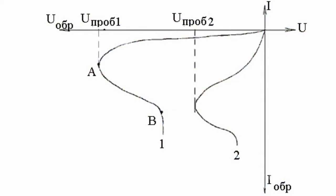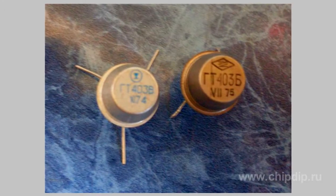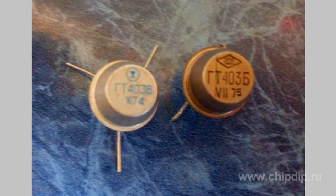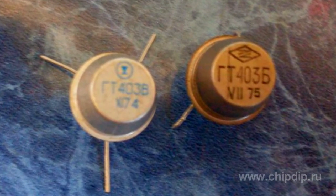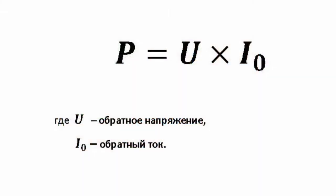The thermal breakdown often occurs in powerful germanium P-N junctions, as they have a high reverse current flowing through them. Since the reverse current value is great, even if the reverse voltage is low — lower than the electrical breakdown voltage — the system generates a lot of power, the value of which is calculated as the reverse voltage multiplied by the reverse current.